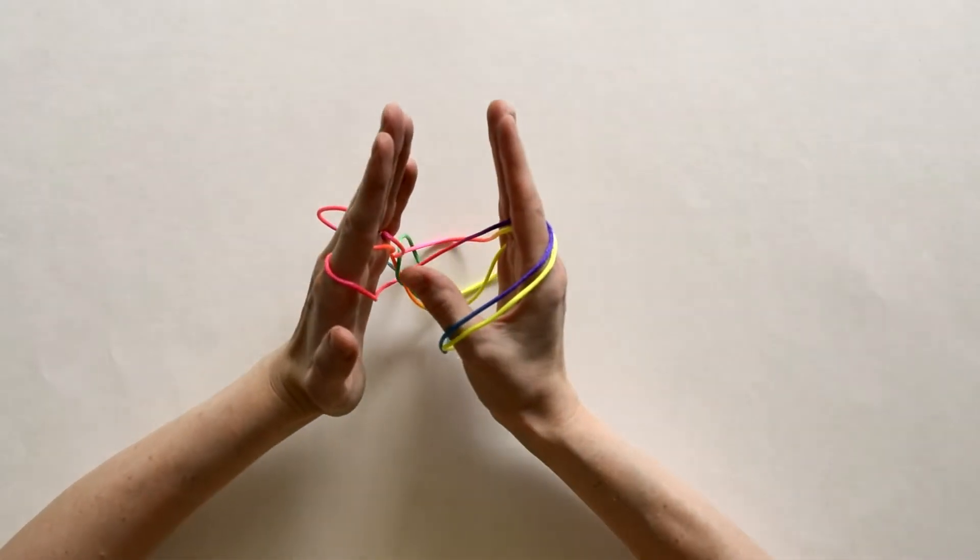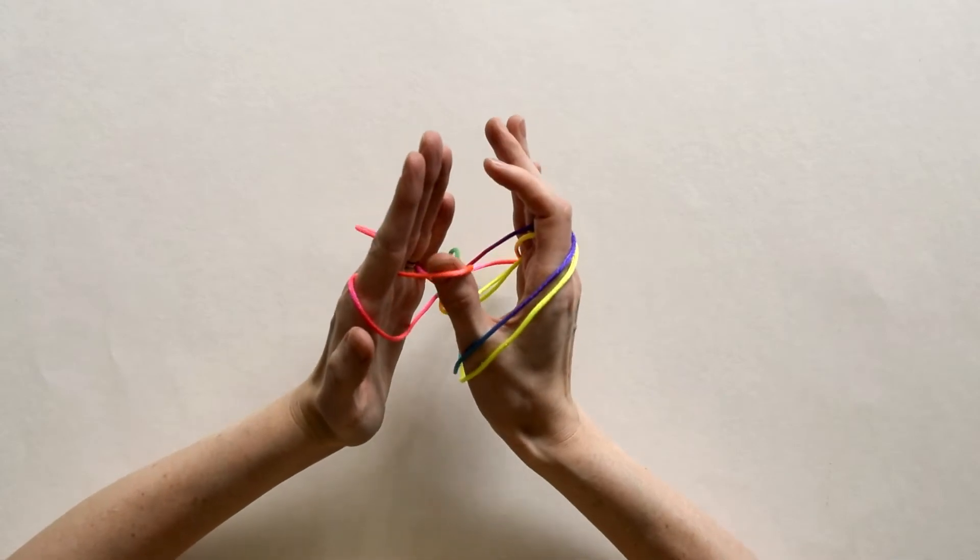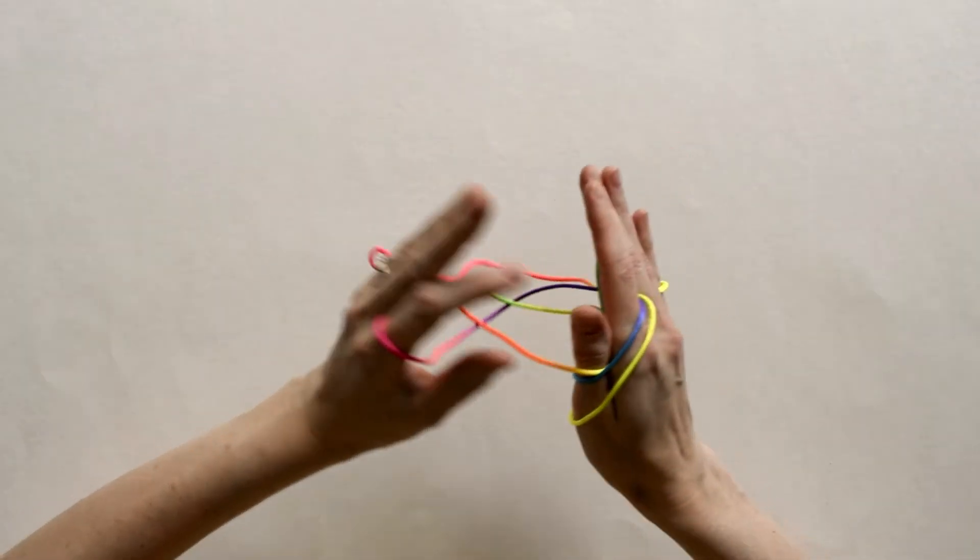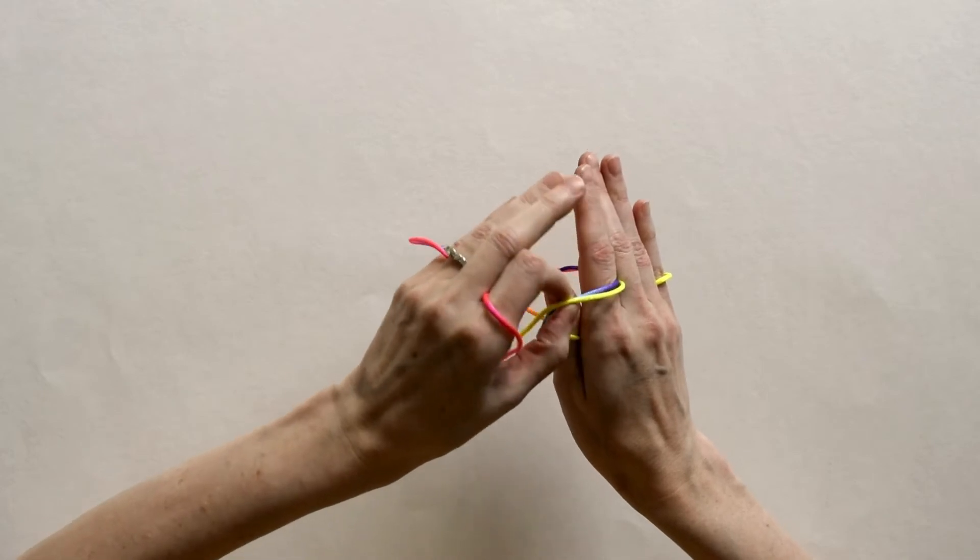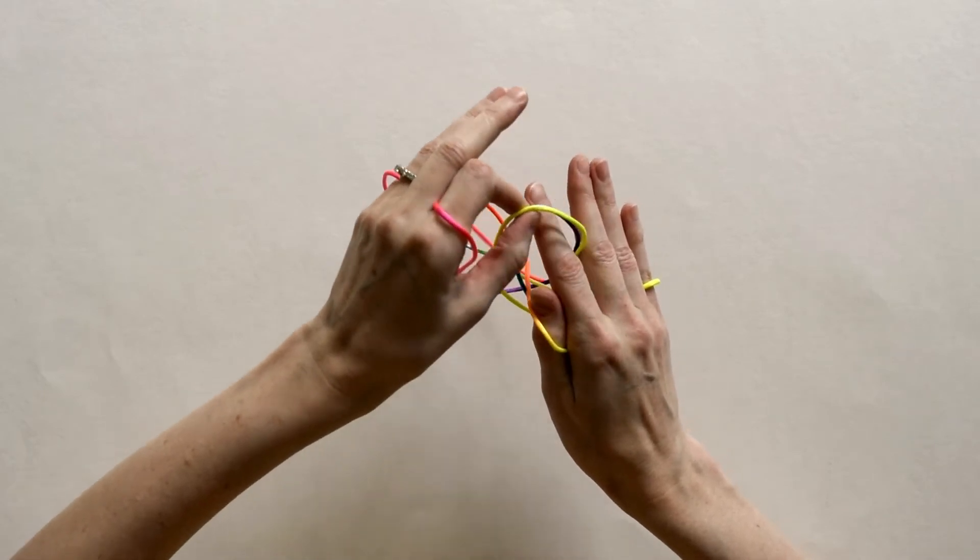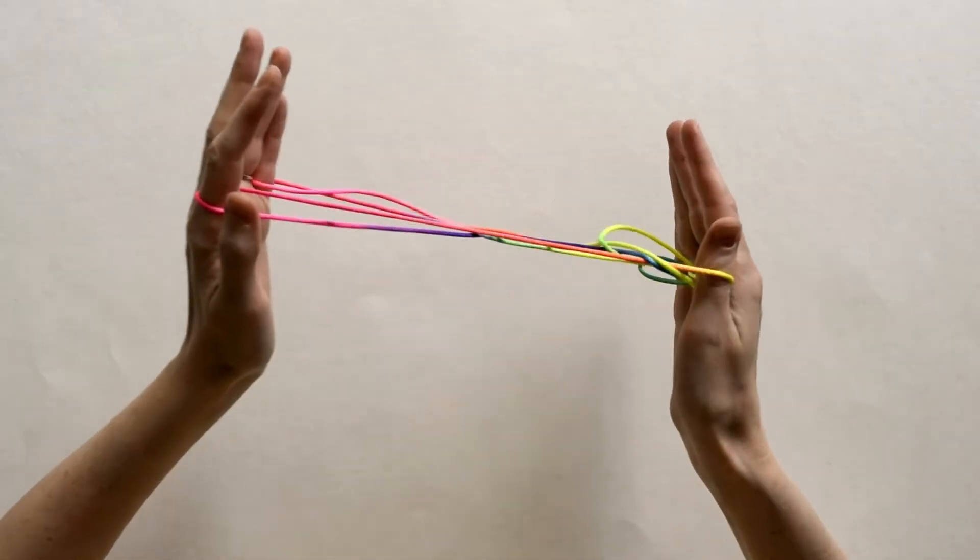Next I'll take my right thumb, grab the further index loop from the left hand and pull it towards me, and then take off both loops from the thumb and index finger on my right hand.